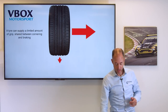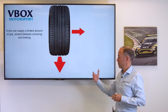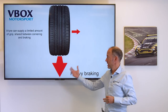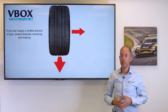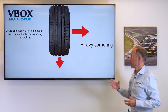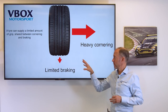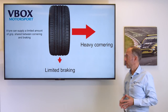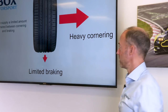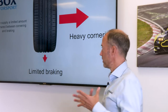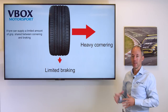However, if you take lots of grip out of the tyre under braking or acceleration, then you lose cornering ability, and also vice versa. If you're cornering heavily, then you have limited braking or acceleration force that you can extract from the tyre. Therefore, it's important that you carefully balance the two.